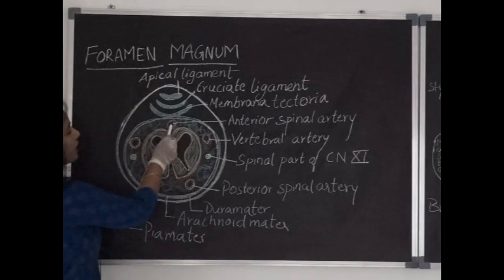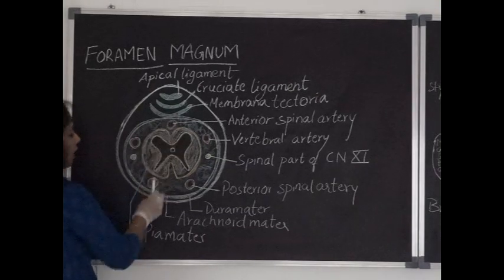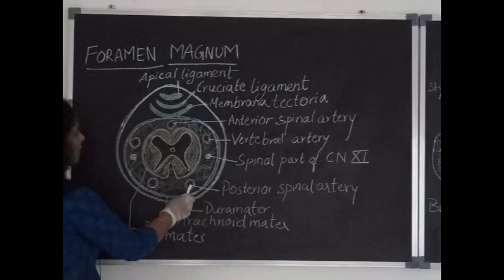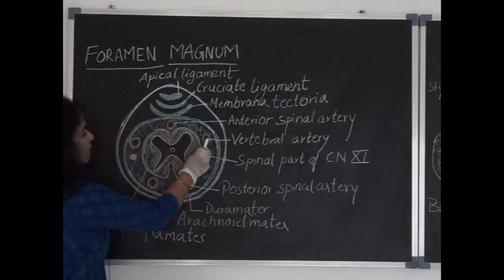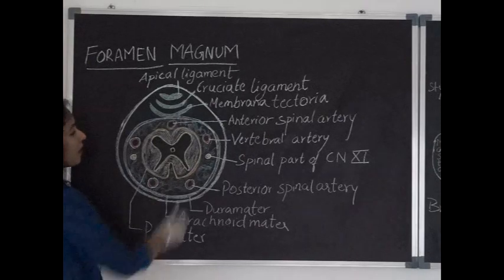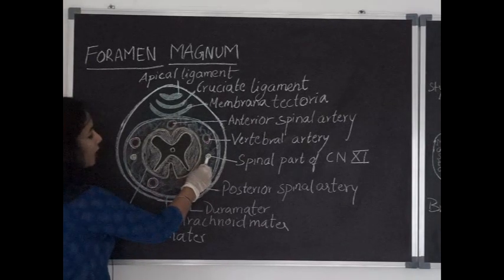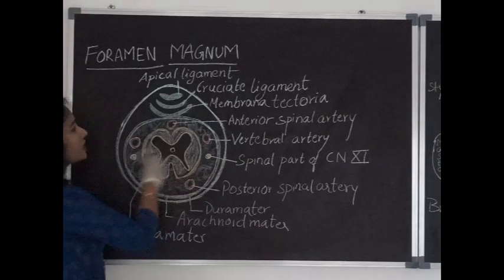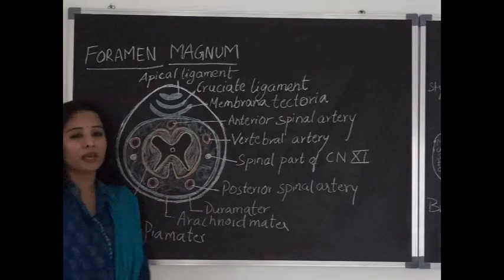The blood vessels are anterior spinal artery which is single and two posterior spinal arteries and two vertebral arteries, fourth part of vertebral arteries along with its sympathetic plexus and spinal part of 11th cranial nerve. These are the structures passing through foramen magnum.